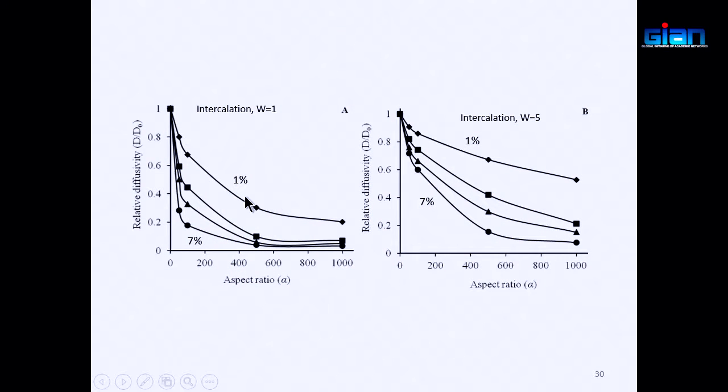Another parameter is the percentage of nanoplatelets — meaning, given a certain weight or volume of polymeric matrix, how much of that is nanoparticle by weight or volume compared to the polymer. This is referred to as the percentage loading. For example, here it shows 1%.